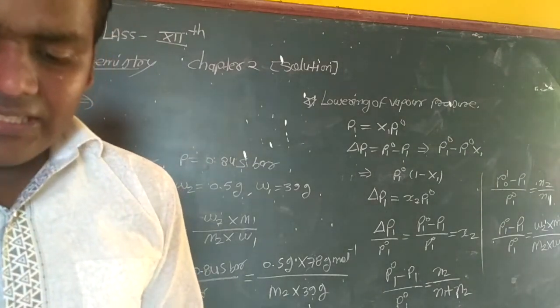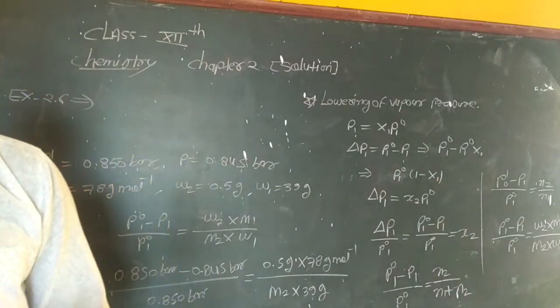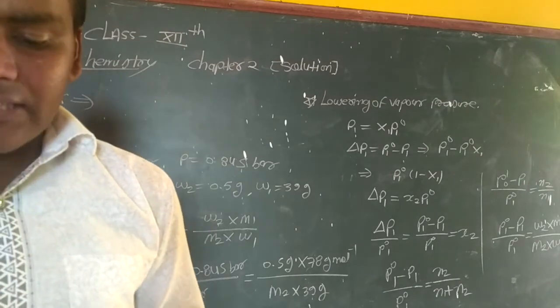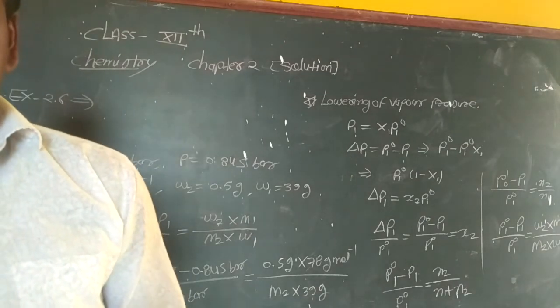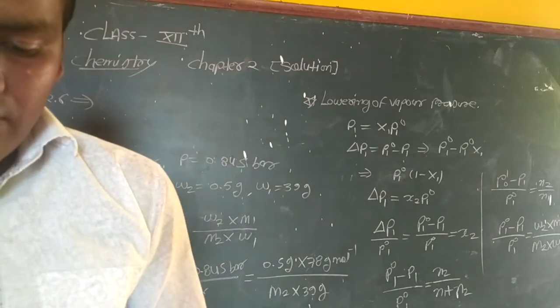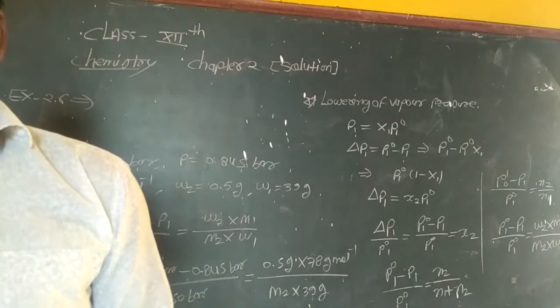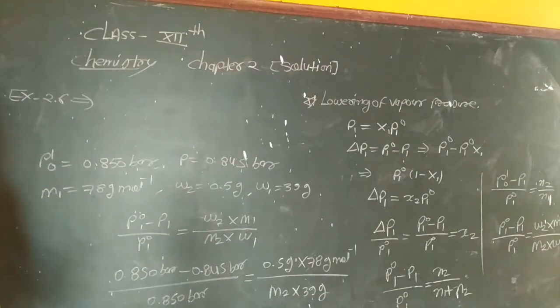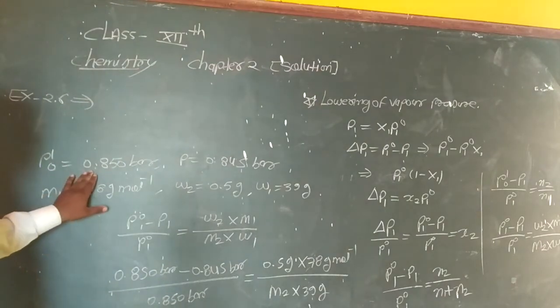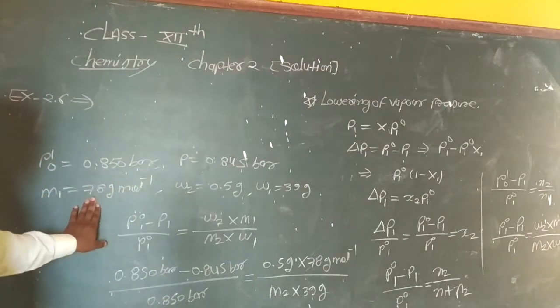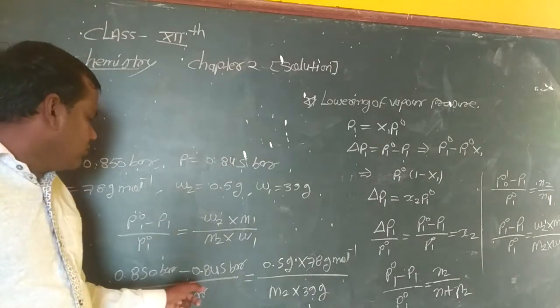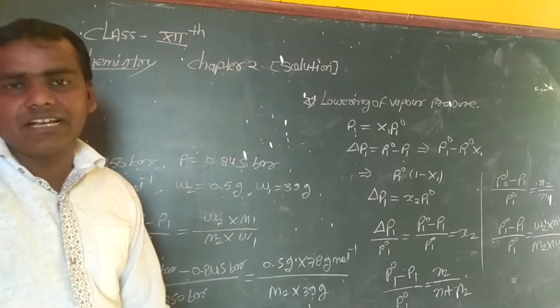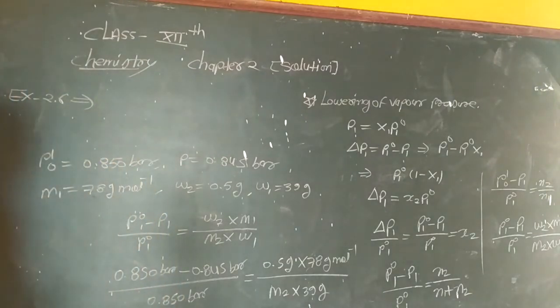Here's a problem: The vapor pressure is 0.850 bar. A non-electrolyte solid weighing 0.5 gram when added to 39.0 gram of solvent causes the vapor pressure of the solution to be 0.825 bar. What is the molar mass of the solid?